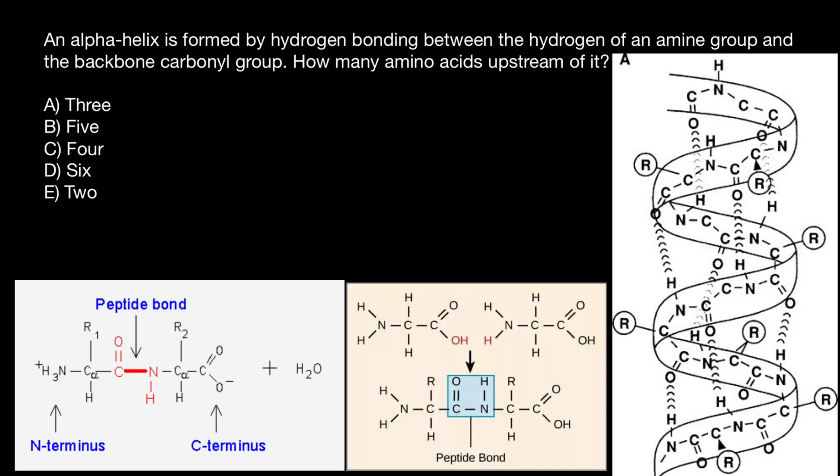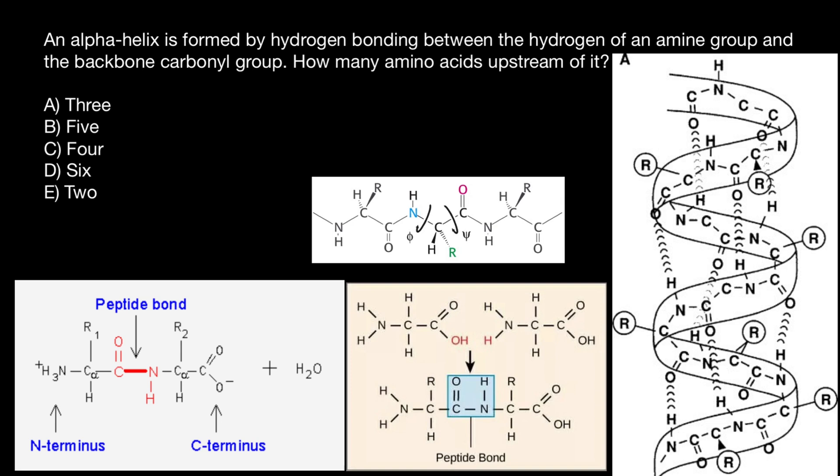Though sometimes these R groups can be found on the same side, which we call cis form, but this is energetically not favorable. Now I want to show you the picture which is going to help you understand these interactions in this alpha helix. So take a look at this picture. Now we see amino group, central alpha carbon, R group, and hydrogen. And here's a carboxylic acid group. Here's a peptide bond.